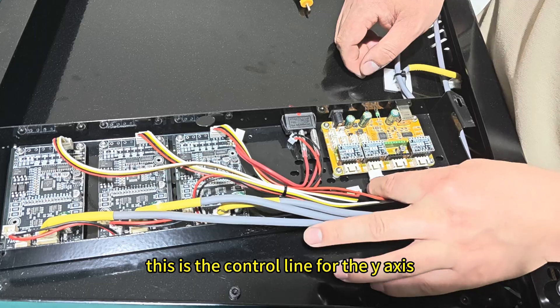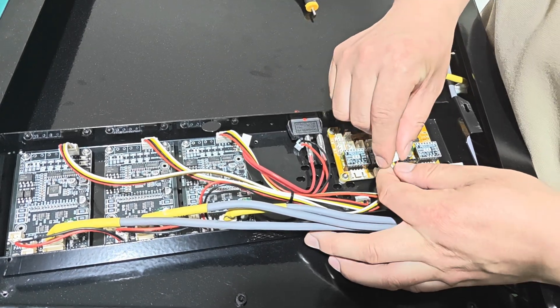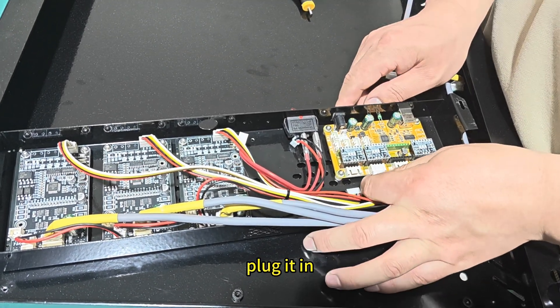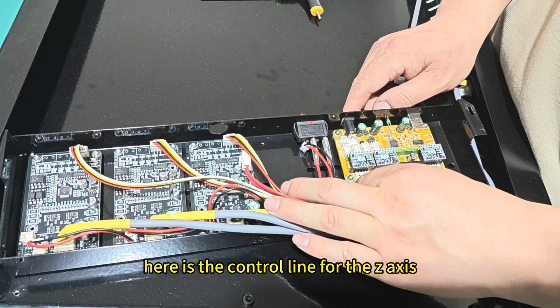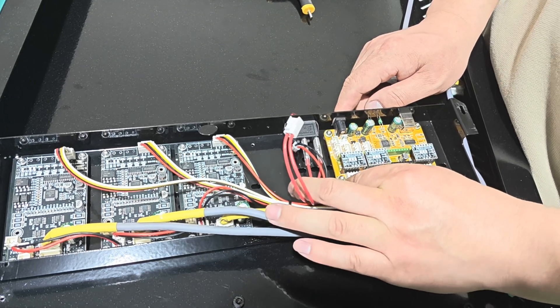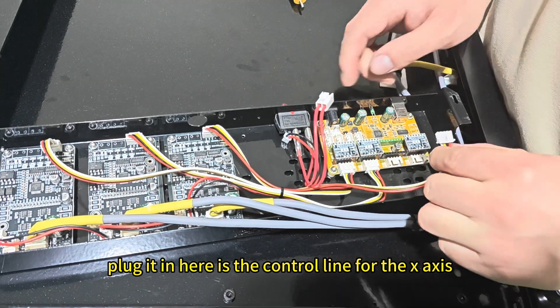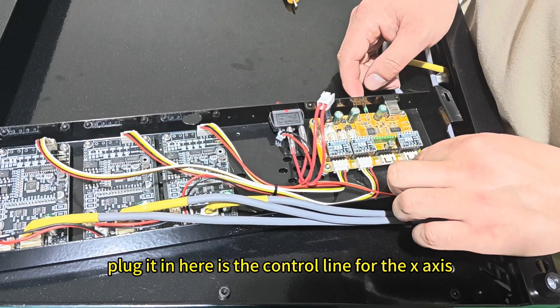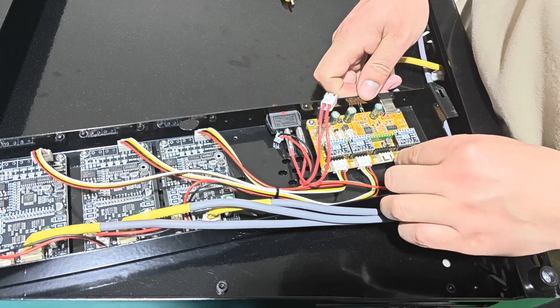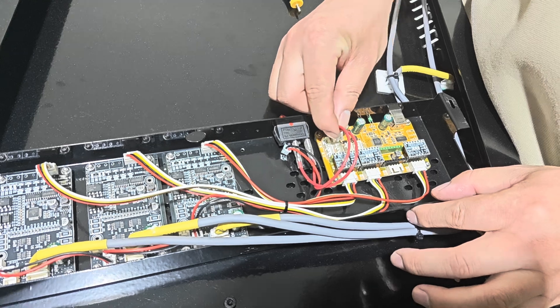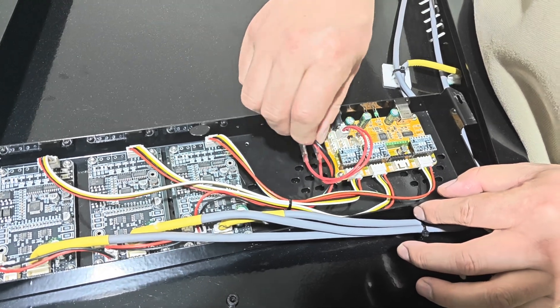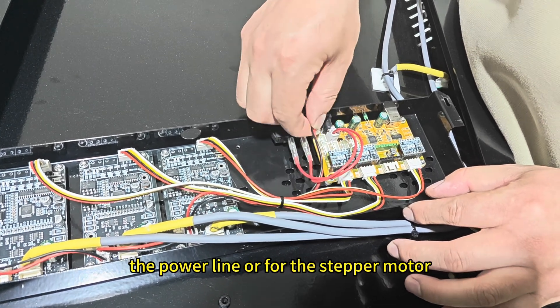This is the control line for the y-axis. Plug it in. Here is the control line for the z-axis. Plug it in. Here is the control line for the f-axis. Power switch line. The power line for the stepper motor.